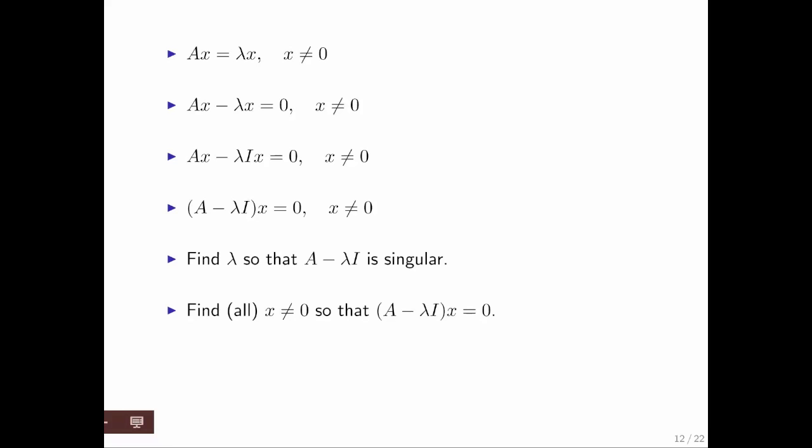And then what we would like to do is characterize all the vectors x that are not the zero vector, such that A minus lambda I times that vector is zero. In other words, we're looking for all vectors x that are in the null space of A minus lambda I. And notice that we're not interested in the vector x equal to zero, because that's the trivial solution to Ax equals lambda x.